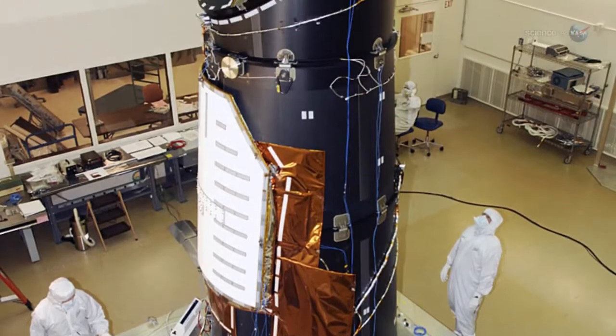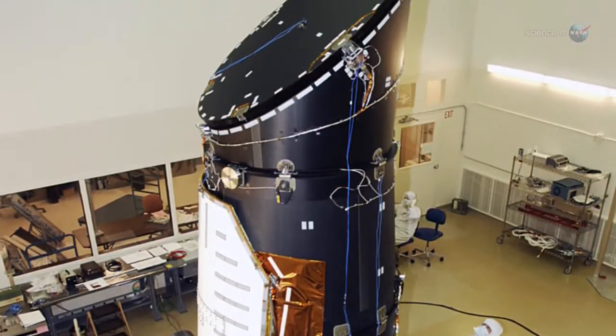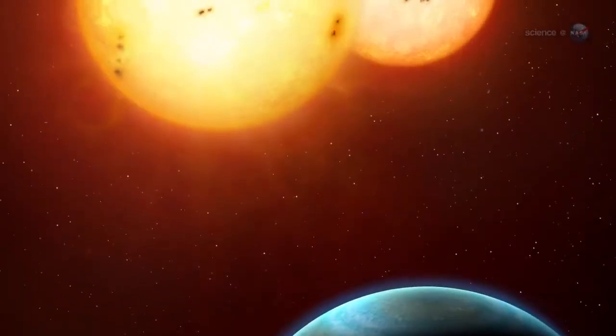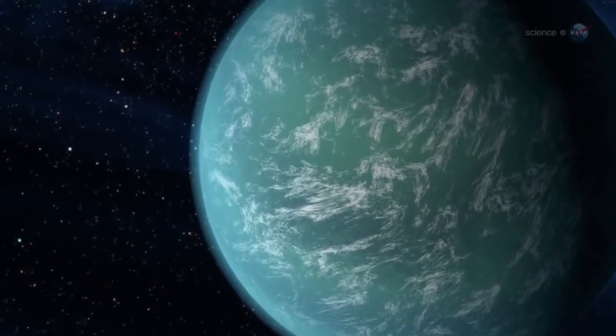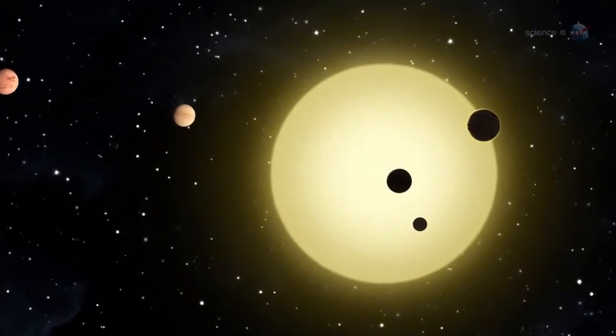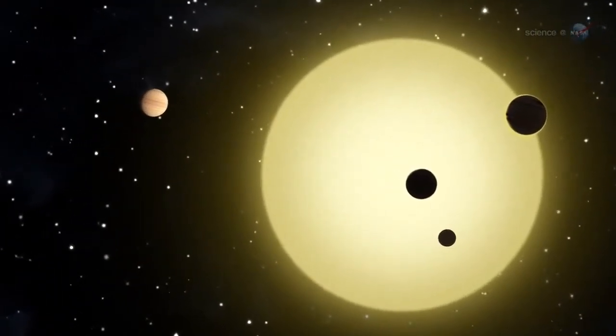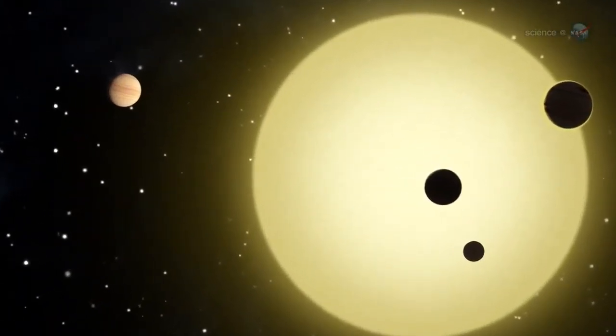NASA's Kepler spacecraft is discovering a veritable avalanche of alien worlds. Recent finds include planets with double suns, massive super-Earths and hot Jupiters, and a miniature solar system. The variety of planets circling distant suns is as wonderful as it is surprising.